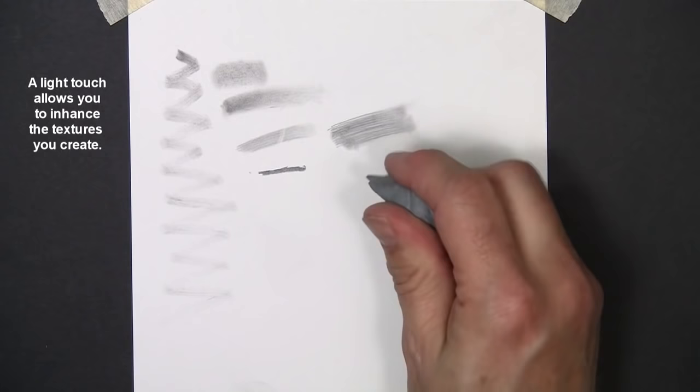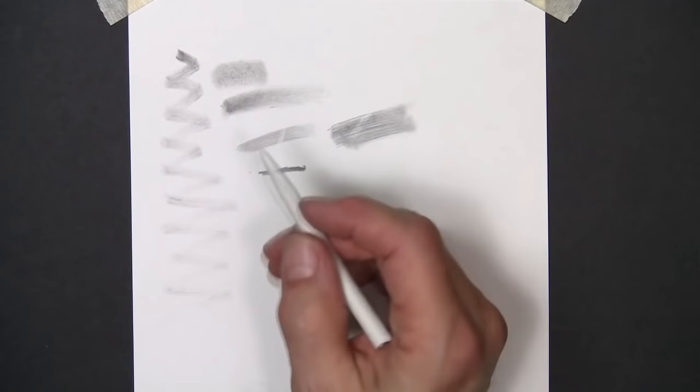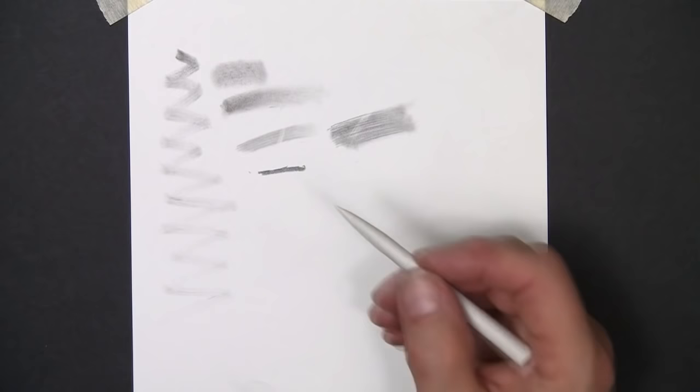The other blending tool that a lot of people are familiar with is a tortillion. I treat it the same way as I do a stump. I don't use back and forth strokes. This is actually rougher on your paper than if you were to use a stump.